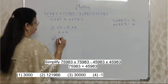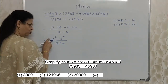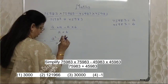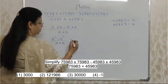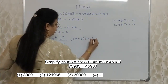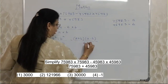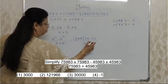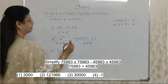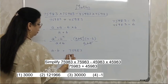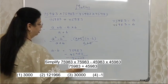This means a squared minus b squared upon a plus b. Looking at it, this is an identity. The factors of a squared minus b squared are a plus b and a minus b. So a plus b in the denominator cancels with a plus b from the factored numerator, and what remains is a minus b. This is our answer. Now substituting the original figures: a minus b is 75983 minus 45983, so the answer is 30000.